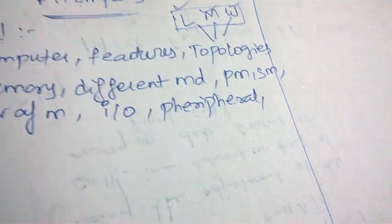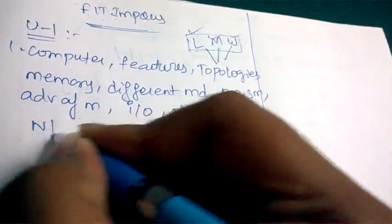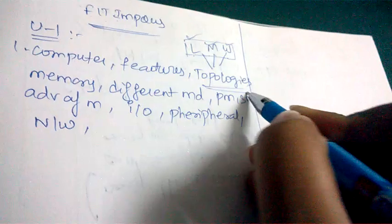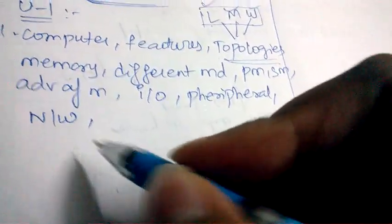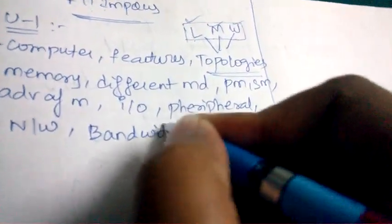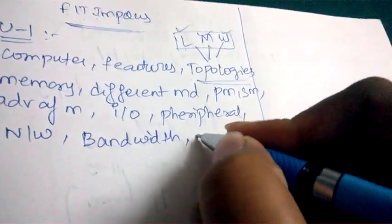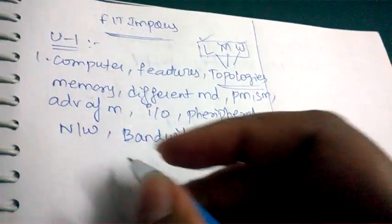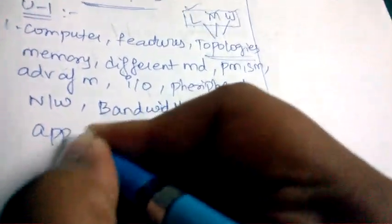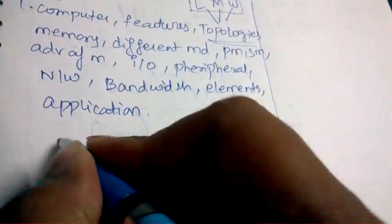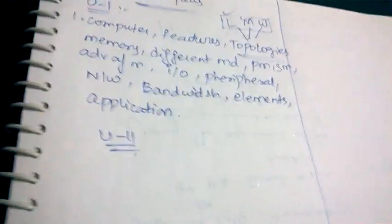Examples of peripheral devices are printers, speakers, etc. Also important: what are network topologies, and define bandwidth. Other Unit 1 questions include what are the elements of a computer and what are the different applications which computers support.